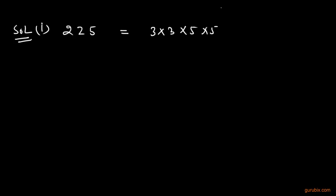And now we shall make groups of the factors in pairs in such a way that both the factors in each pair are equal. So, we can pair them like this.